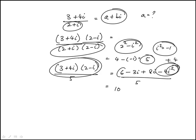So this becomes plus 4. So that's 10, 6 plus 4, and then plus 5i over 5, this becomes 2 plus i, which is kind of interesting to see. 3 plus 4i over 2 plus i is 2 plus i.